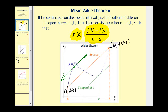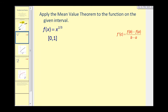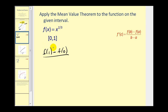Let's go ahead and try an example. We want to apply the mean value theorem to this function on the interval from zero to one. For the first step, we'll determine the slope of the secant line through these endpoints. So we need to determine f of one minus f of zero, all divided by b minus a, or one minus zero.